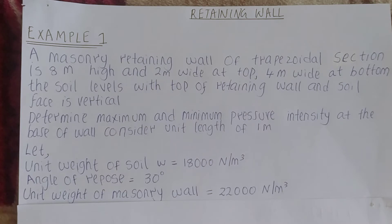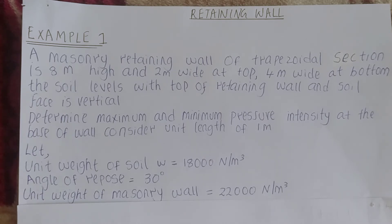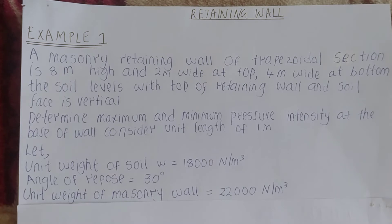Today we shall look at an example. The question says that a masonry retaining wall of trapezoidal section is eight meters high, two meters wide at the top, four meters wide at the bottom. The soil levels with the top of the retaining wall and the soil face is vertical. Determine the maximum and minimum pressure intensity at the base of the wall, considering unit length of one meter. Let the unit weight of soil be 18,000 Newtons per meter cubed, the angle of repose be 30 degrees, and the unit weight of the masonry wall be 22,000 Newtons per meter cubed.